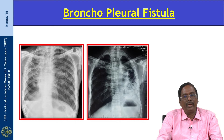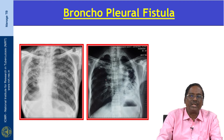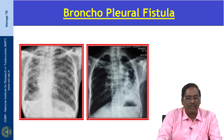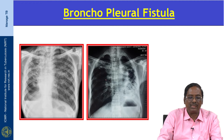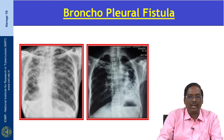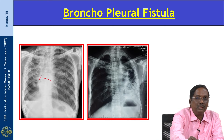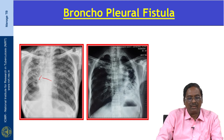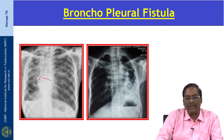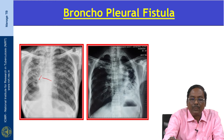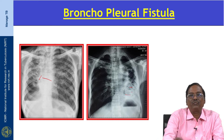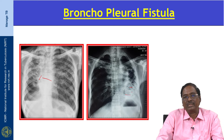Bronchopulmonary fistula is due to establishment of spontaneous communication between the bronchial tree and pleural space. Diagnosis is based on increasing amount of sputum production, multiple air cavities with air-fluid level, and shift of the mediastinum to the same side. CT can demonstrate the site of communication between the pleural space and the airway. Here there are multiple cavities with pleural air-fluid level and mediastinal shift.